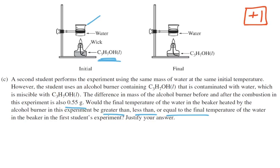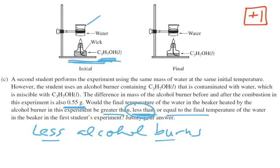Some students across the nation kind of misinterpreted that, and they said, we're still burning 0.55 grams of alcohol, and that's not true. The difference in the mass is going to be 0.55 grams. Some of that is the alcohol that's burning, and the other is a little bit of water that's going to evaporate as we go through. So what's going to happen is we have less alcohol that's going to burn, less fuel that burns, and therefore, we expect the temperature to be less than what it would have been in the first student's experiment.